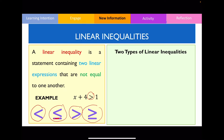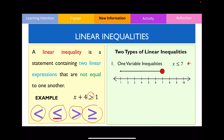Now you also need to recognize that there are two different types of linear inequalities. The first type is referred to as the one variable inequality — one variable meaning one letter. Notice in this particular example, you only have one particular letter in that inequality. And when you graph the solution of this, notice that this particular graph is plotted on a horizontal number line.